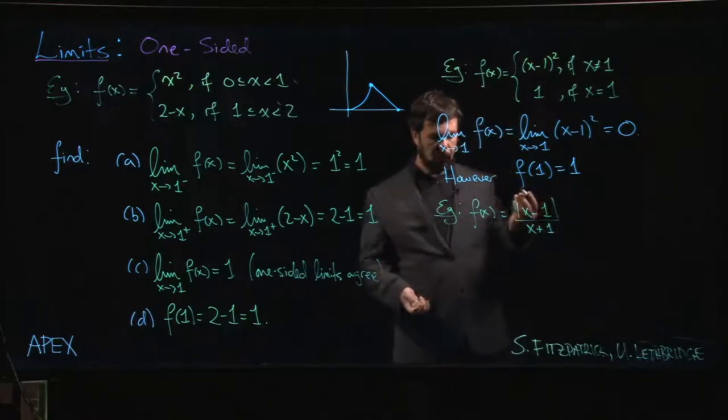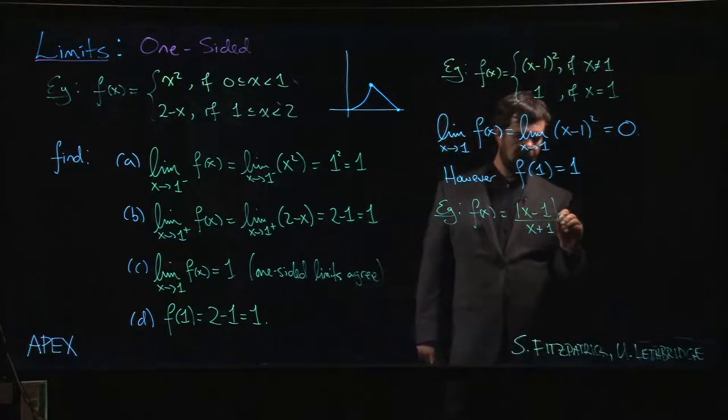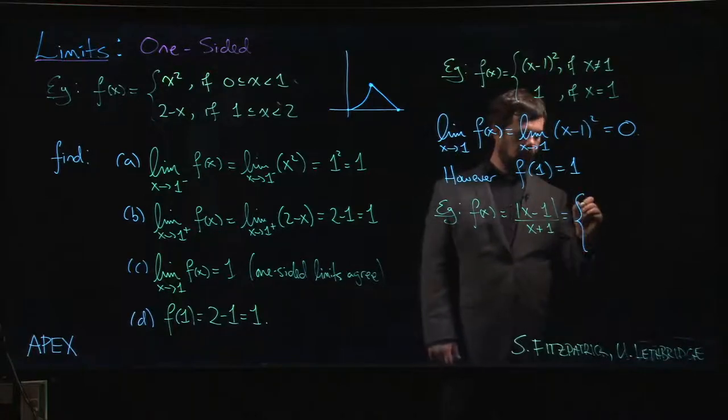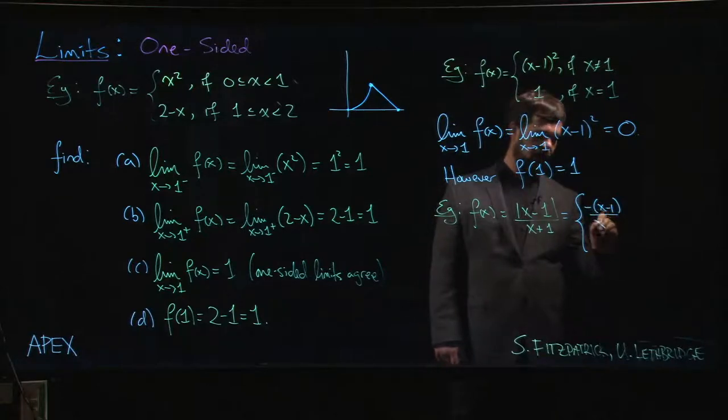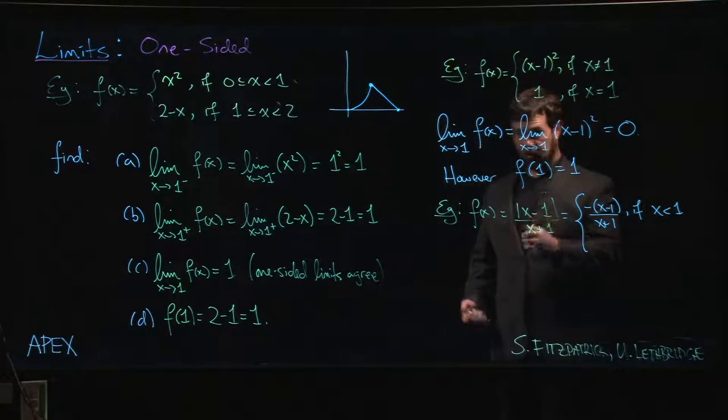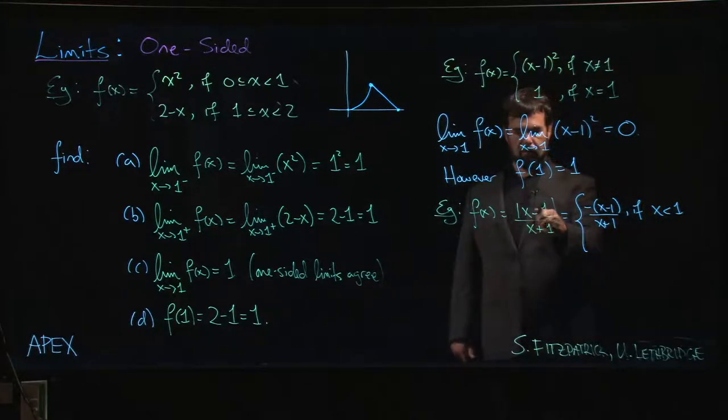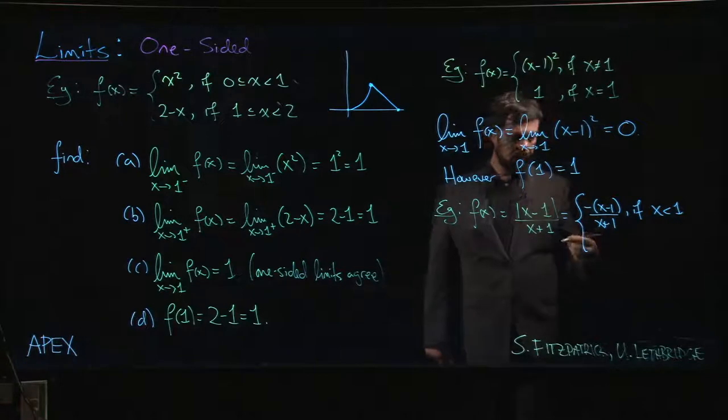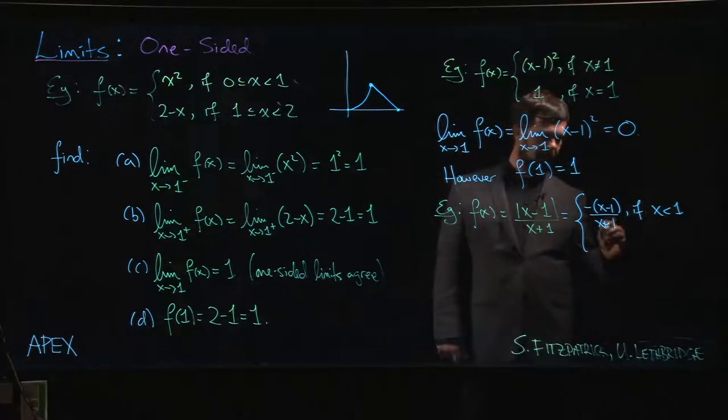It's going to be minus (x minus one) over (x plus one) if x is less than one. Because if x is less than one, x minus one will be negative, and remember that if you put something negative into an absolute value it puts a minus sign out front to switch the sign back to positive.